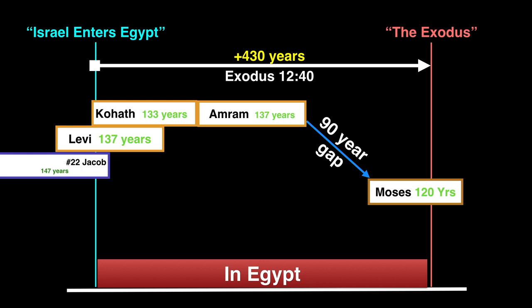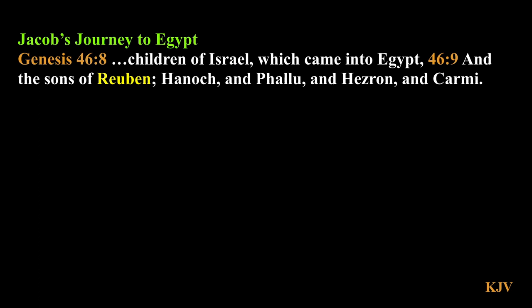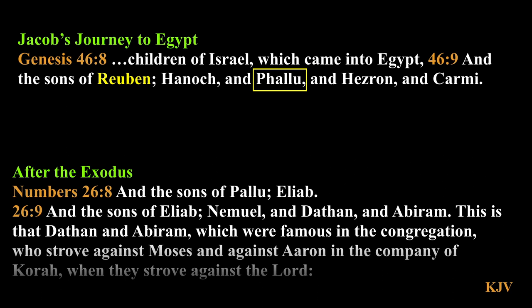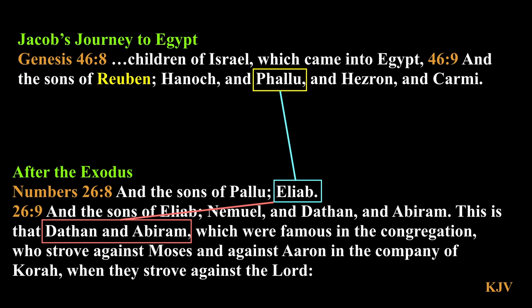This creates, at minimum, a 90-year gap between Amram's last possible year for death and Moses' birth. But we shorter proponents aren't done yet. Because in the caravan list, it says that Reuben's son, Pallu, entered into Egypt. But, in Numbers 26, it records Datham and Abram being contemporaries of Moses after the Exodus. So, you see, there's only two generations back from Datham and Abram to Pallu, who entered into Egypt. Now, you are not going to be able to cover 430 years with only two generations.